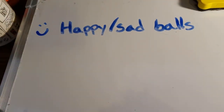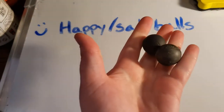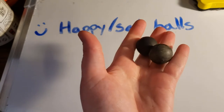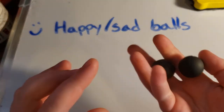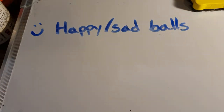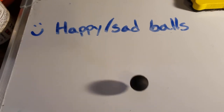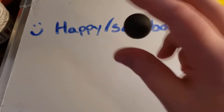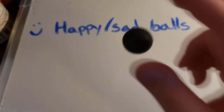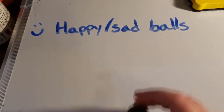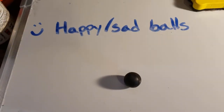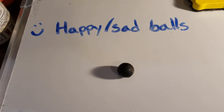I have two bouncy balls here, and they seem identical looking at them. They both seem squishy — they feel like bouncy balls. So I'm going to use them the way a bouncy ball works, and I'm going to bounce one. Everything's so far so good — we have a bouncy ball. However, if I take the other one and try to bounce it, it just sort of falls flat.